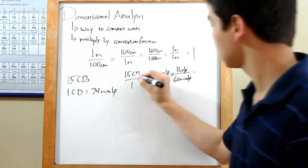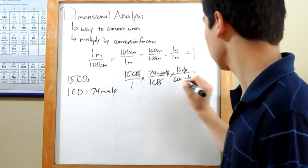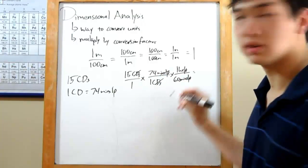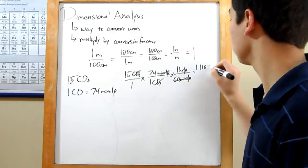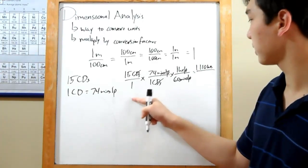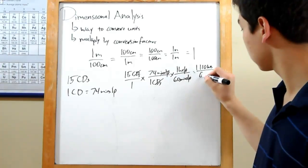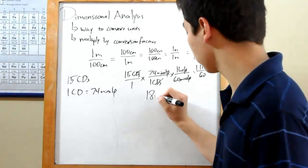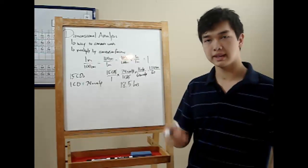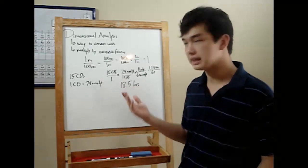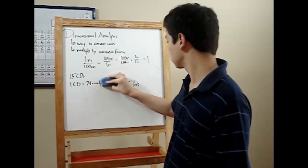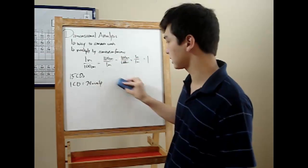And that's all you have to do. Cross off your units. CDs cancel out. Minutes cancel out. And then just multiply through. 15 times 74 times 1 will give you 1,110. And then on the bottom, 1 times 1 times 60 will give you 60. Dividing through will give you 18.5 hours. And that was all there is to it. And what we did was this odd conversion from CDs into hours. You don't normally see that. But that's just one of the types of abstract conversions you might run into in chemistry.